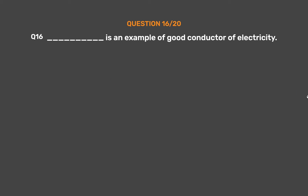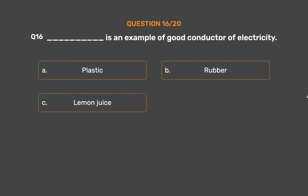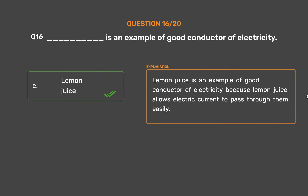Question No. 16: Underscore is an example of a good conductor of electricity. Option A: Plastic. Option B: Rubber. Option C: Lemon juice. Option D: Wood. The correct answer is Option C: Lemon juice. Lemon juice is an example of a good conductor of electricity because lemon juice allows electric current to pass through it easily.